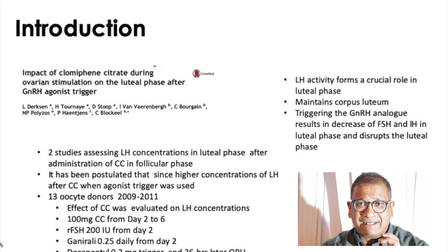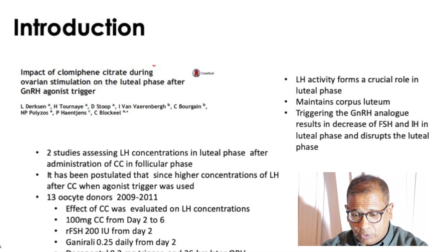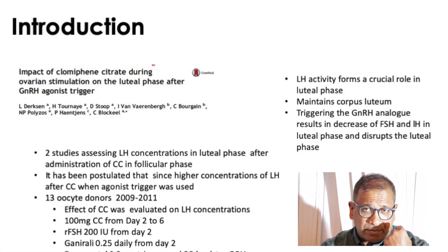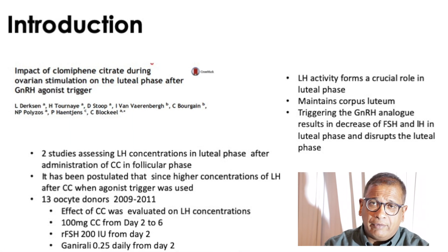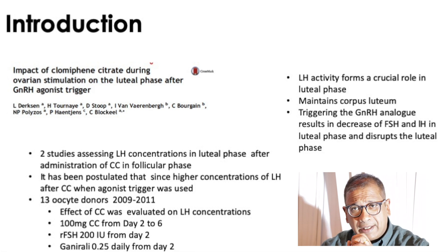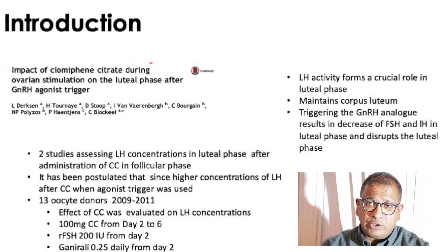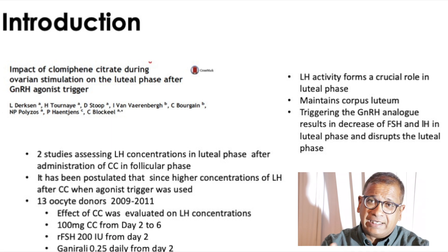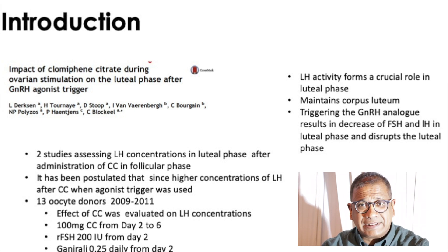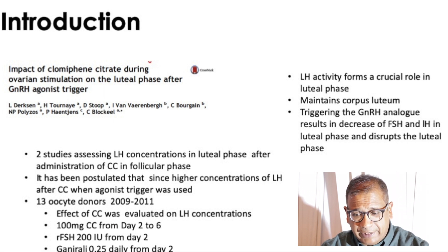What we know is that LH activity is crucial to support the luteal phase — it maintains the corpus luteum. A lot of our luteal phase defect research is concentrating on the corpus luteum or on the endometrium. What helps the corpus luteum to survive is LH-like activity, and HCG also gives LH-like activity. Triggering with a GnRH analog results in a decrease of FSH and LH in the luteal phase, so your FSH and LH come crashing down and the luteal phase gets disrupted.